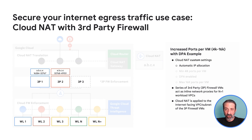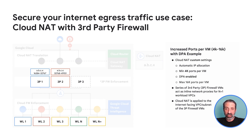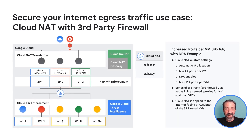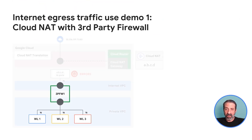As additional third-party firewall machines are scaled up, Cloud NAT will provision the minimum ports to the new VM. With DPA and auto IP allocation enabled, Cloud NAT can scale with your instance groups. Just make sure to use a minimum ports per VM high enough to account for the number of connections each third-party firewall might make to the same destination IP and port.